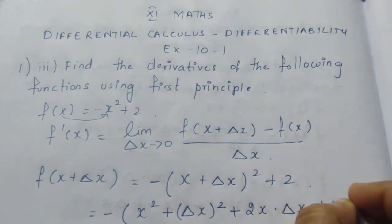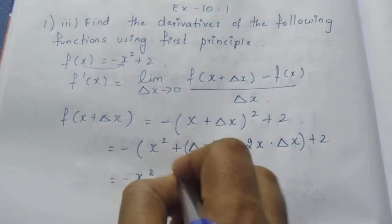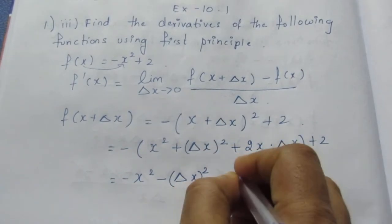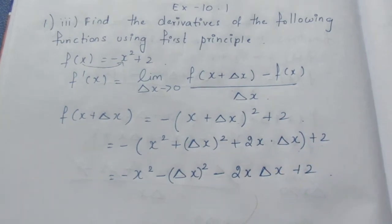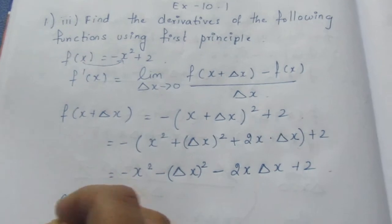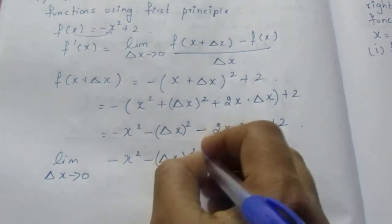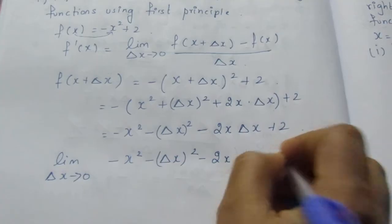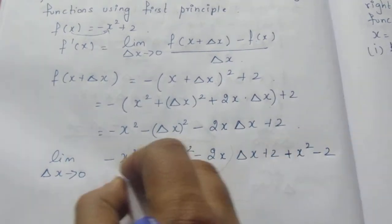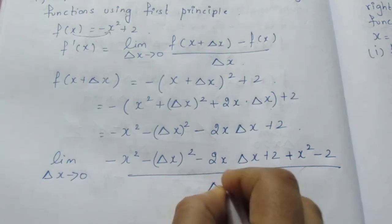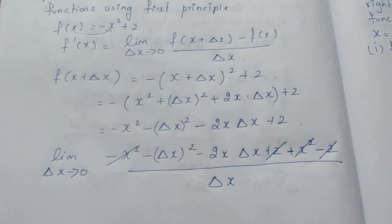F of x plus delta x equals minus of x plus delta x the whole square plus 2, minus of x square minus delta x the whole square minus 2x into delta x plus 2. Minus sign plus 2. So if we substitute limit delta x tends to 0, this is minus x square minus delta x the whole square minus 2x into delta x plus 2, minus of f of x value, so minus 2 by delta x. Plus 2 minus 2 cancel, plus x square minus x square cancel.